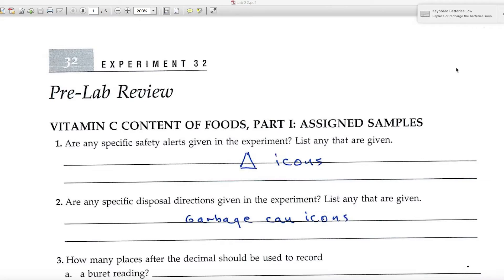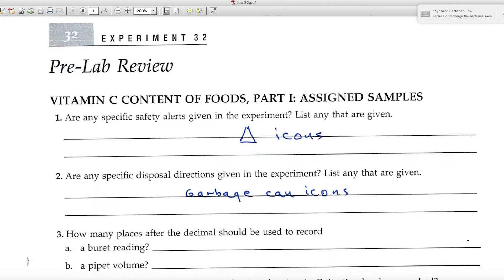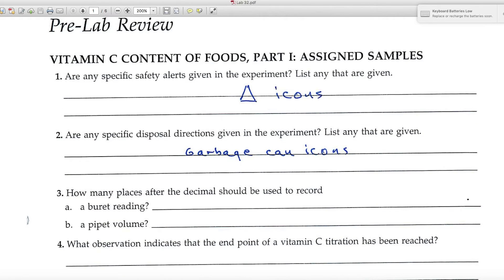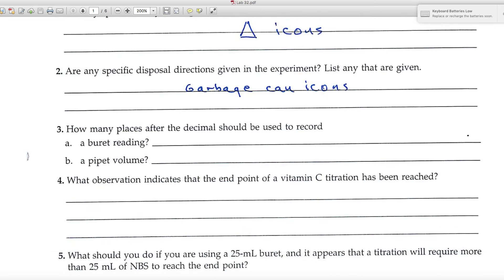Experiment 32 deals with the vitamin C content of foods. Let's have a look at the data and report pages. The pre-lab review begins with a number of questions. The first one, specific safety alerts, you'll want to look for the triangle icons. Number two, disposal directions, you'll look for the garbage can icons.